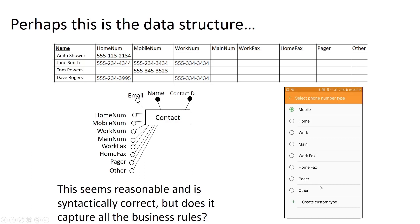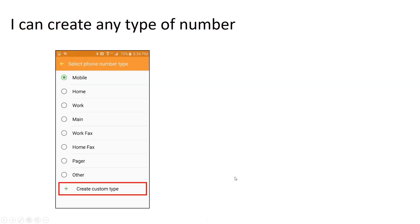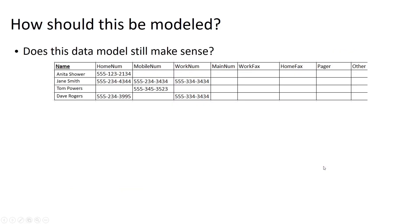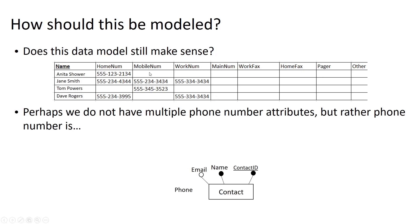But then I noticed a button that says 'create custom type.' When I clicked on it, I found I can create phone numbers for virtually anything I want — I have kind of unlimited options here. So now I'm not sure this data model makes sense, because I can't just have an infinite number of types of phone numbers as attributes associated with this entity.